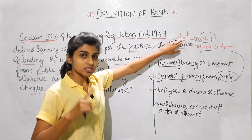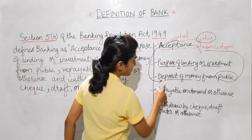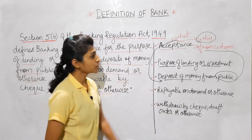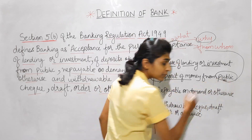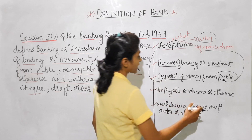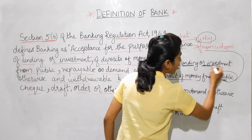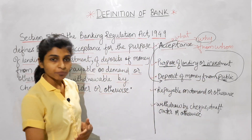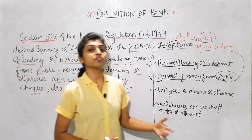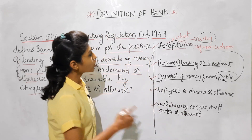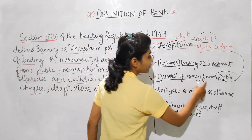What does the bank accept? The answer is: the bank accepts deposits of money. From whom does the bank accept? It accepts deposits of money from the public. And why does the bank accept? The bank accepts deposits from the public for the purpose of lending or investment. Lending means the bank lends money in terms of loans — it gives money to the public whenever the customer requires. So: acceptance for the purpose of lending or investment of deposits of money from public.